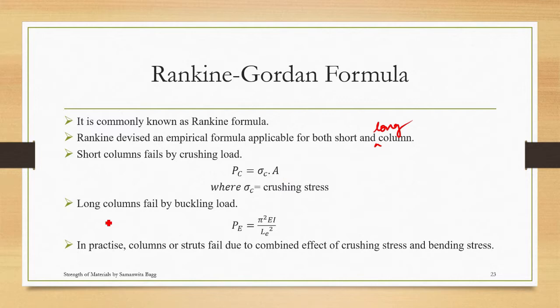Long columns fail by buckling load. When we design the buckling load using Euler's formula, it is pi squared EI upon Le squared. In practice, columns or struts fail due to combined effect of crushing stress and bending stress. But when we design, we generally say that it is only by crushing that the short column is failing and by buckling that the long column is failing. So this is all theory, but in practice you will see that there is a combined effect of both.